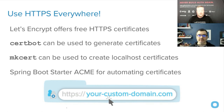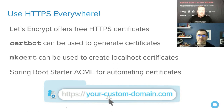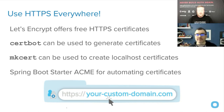Let's Encrypt offers free HTTPS certificates, so it's very easy to use HTTPS and TLS these days. Certificate authorities used to charge quite a bit for SSL certificates, especially wildcard certificates, but now you can get those for free from Let's Encrypt. You can use CertBot to generate certificates, and there's also a tool called MKCert for creating localhost certificates. MKCert actually adds certificates to your local CA on your operating system, so you don't get browser warnings. There's also a Spring Boot Starter ACME — Automatic Certificate Management Environment — for automating renewal of certificates from Let's Encrypt.